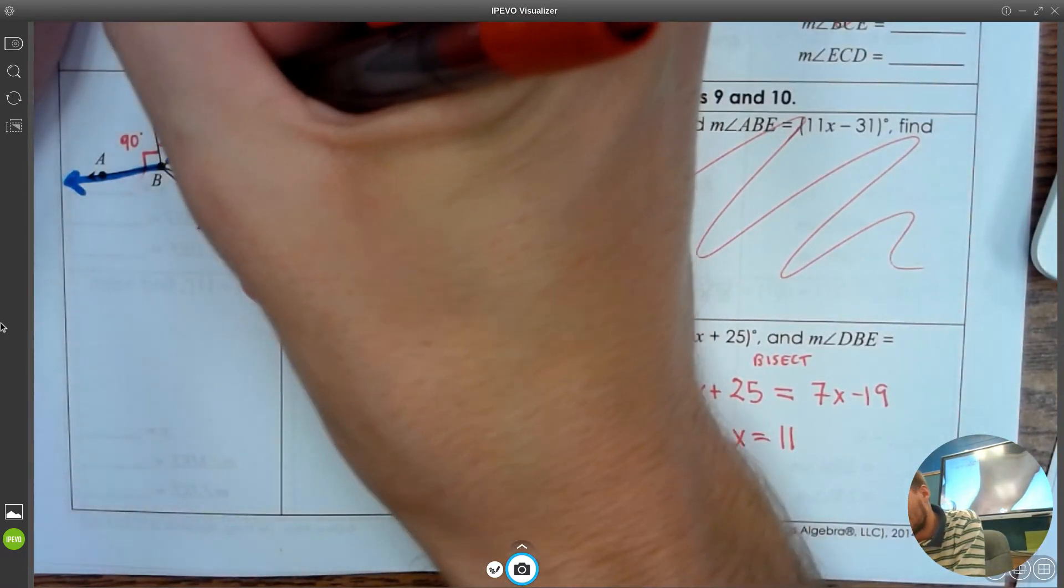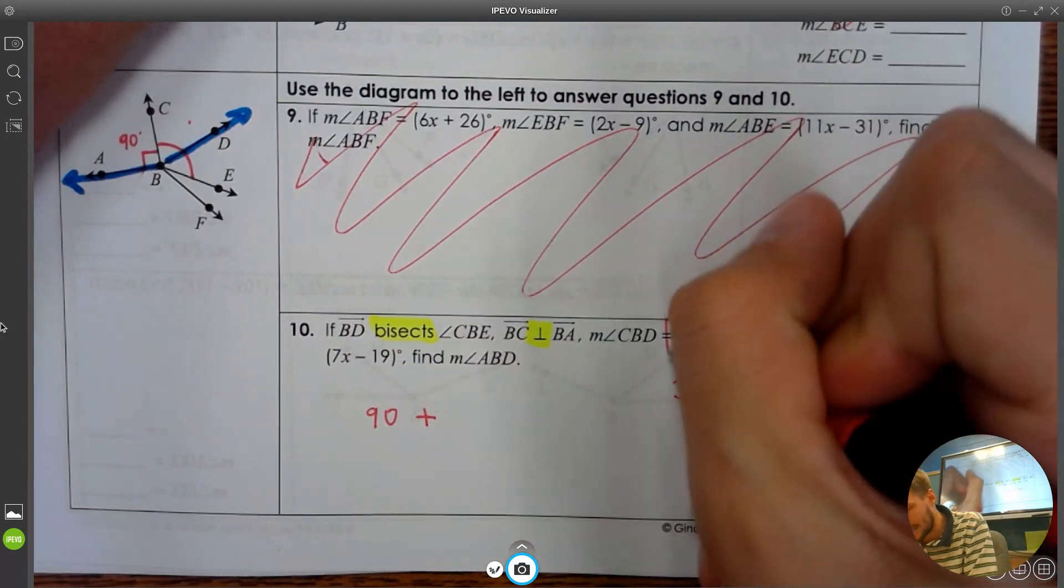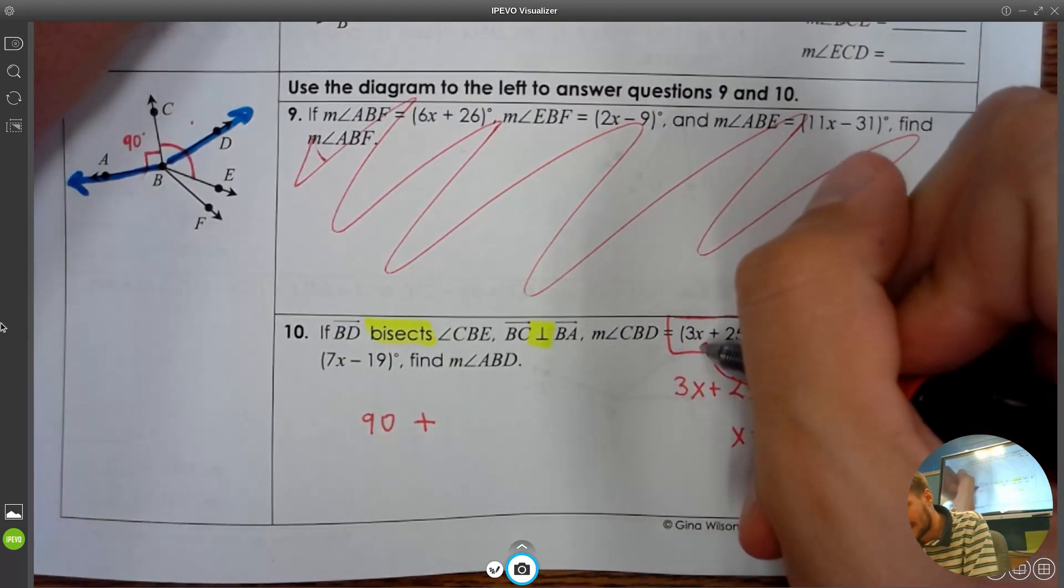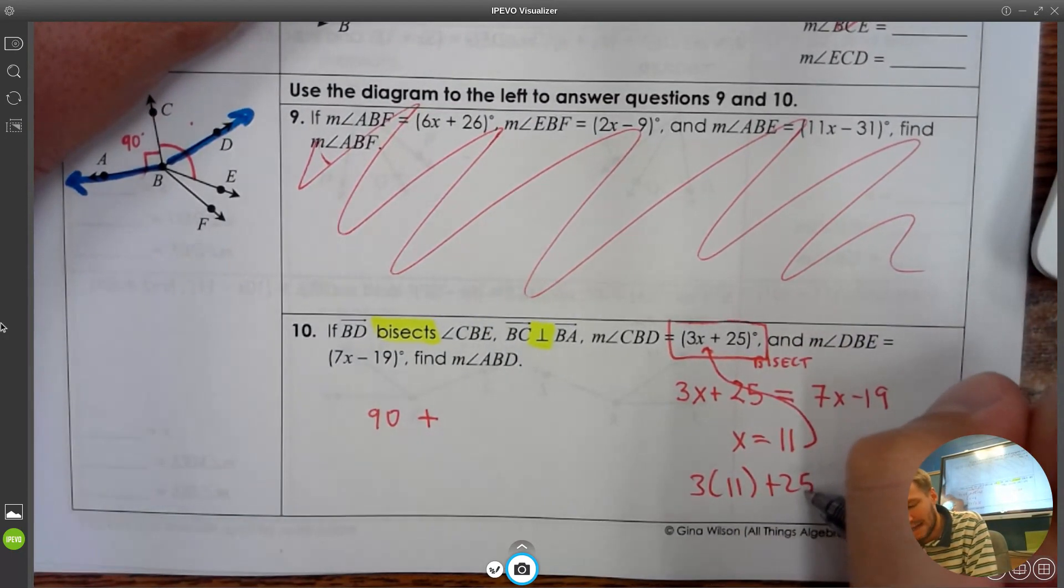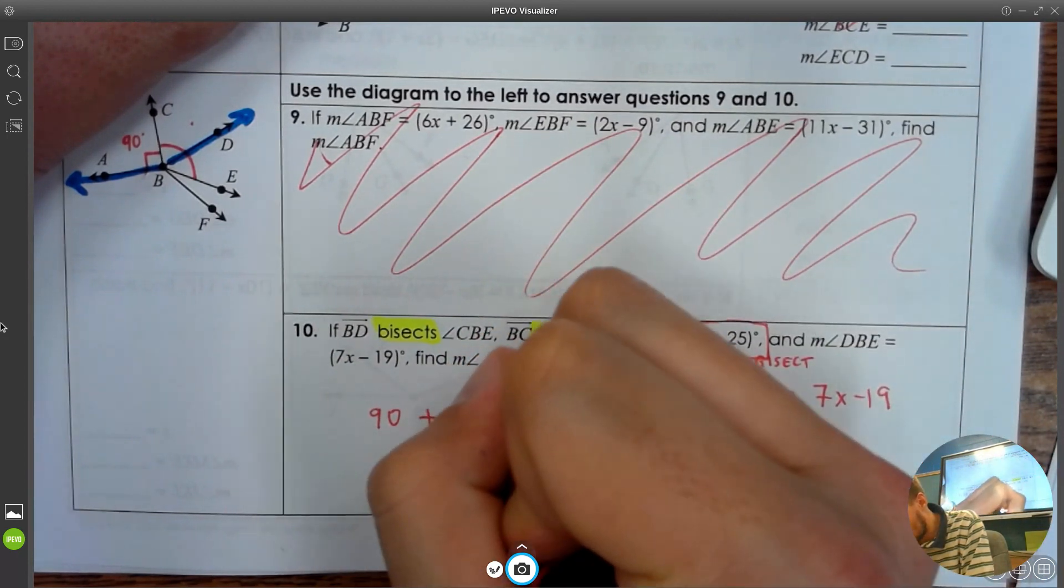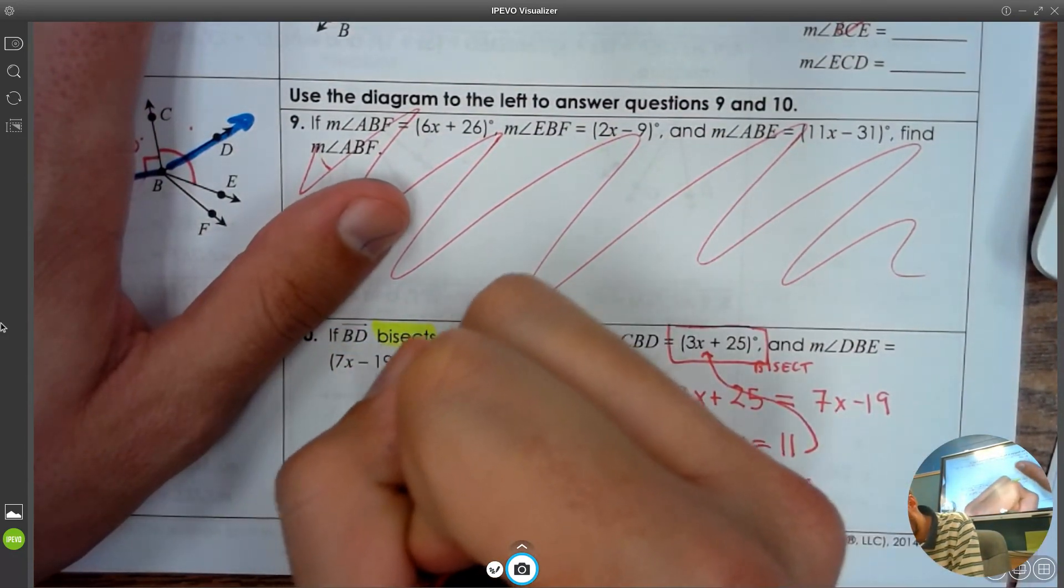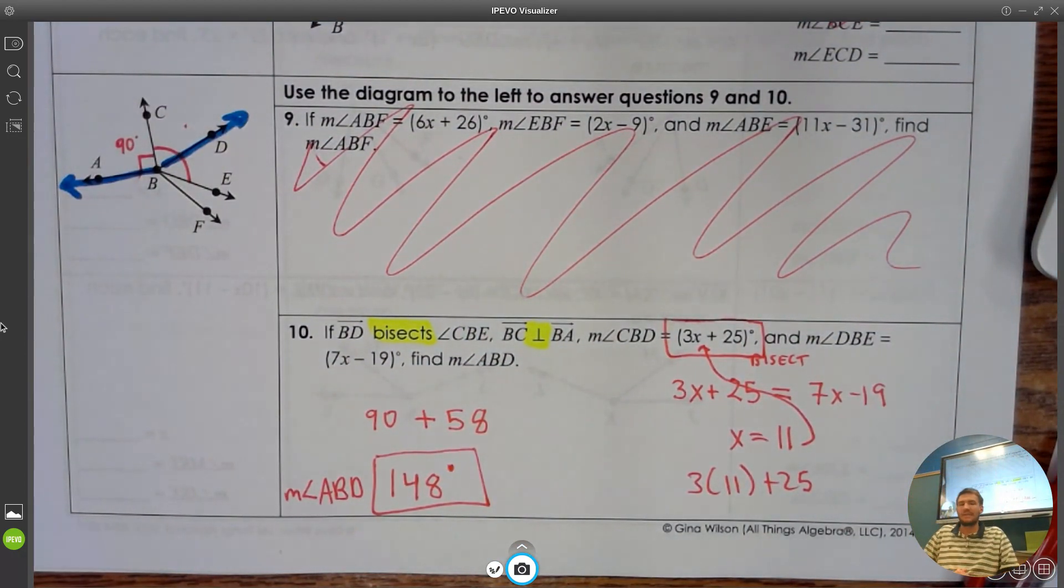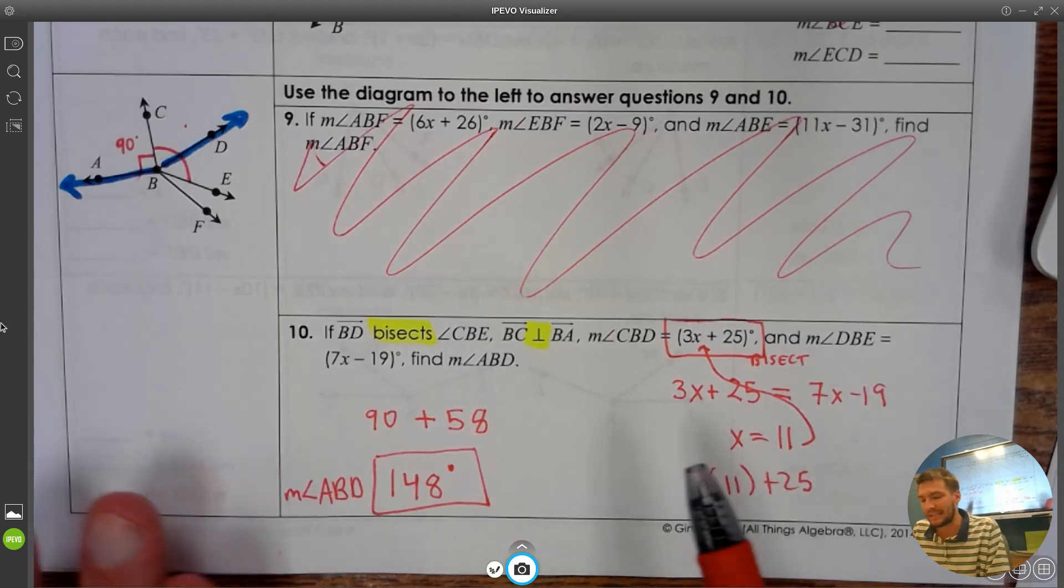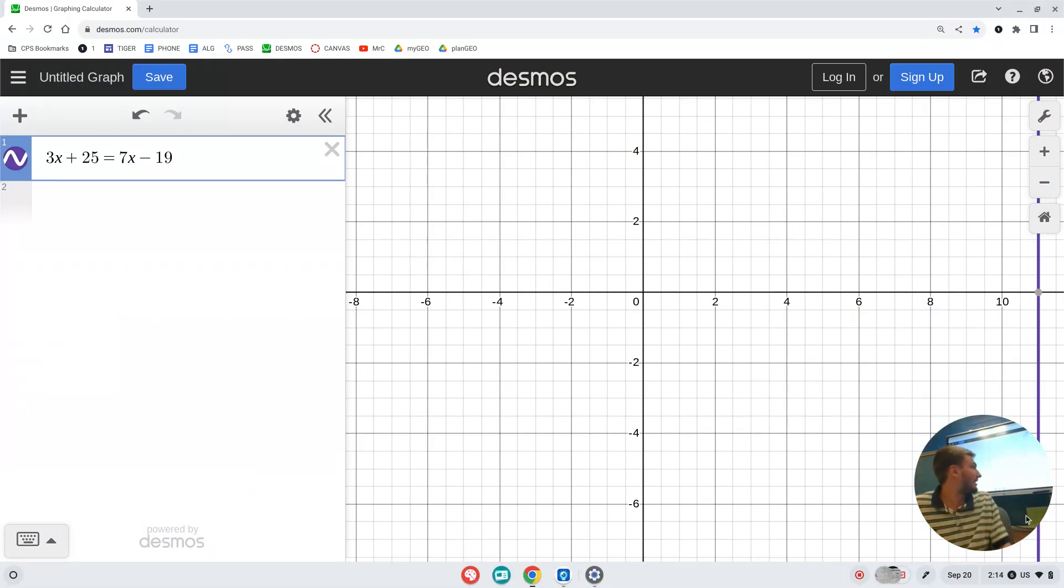We're going to want to use Desmos to figure out what that X value is going to be. 3x plus 25 equals 7x minus 19. My X value is 11, and I'm not quite wrapped up yet. X equals 11. I know this part's 90, but this angle is not 11. CBD, I'm going to need to put the 11 into that CBD. I'm going to need 3 times 11 plus 25. That's going to be 58. And so 90 plus 58 is 148, which is the measure of angle ABD. Now, if you didn't 100% follow along with that last question, it happens. It's the very first day. But I hope that you see, even with these simple setups, there still can be a lot of depth to these questions.